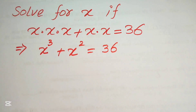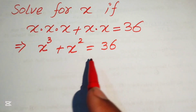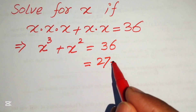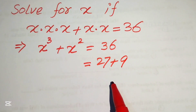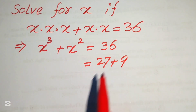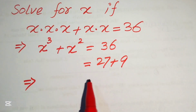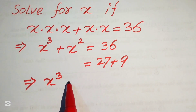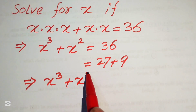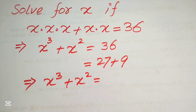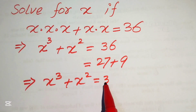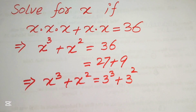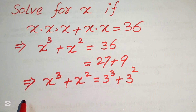Now we focus on the right-hand side. We have 36, and we rewrite it as 27 plus 9, since 27 plus 9 equals 36. We then express these as prime factor exponents: 27 is written as 3 cubed, and 9 is written as 3 squared.